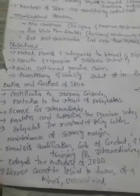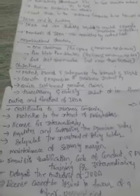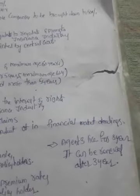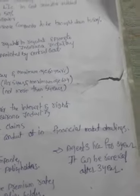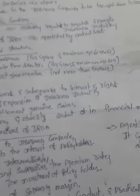IRDA delegates its authority to authorized persons. A license cannot be issued in favor of a minor or a person of unsound mind — such persons have no right to get a license to act as an intermediary. The IRDA provides an agent license for a period of 3 years, after which the agent must renew the license. The full form of IRDA is Insurance Regulatory and Development Authority of India — IRDAI.